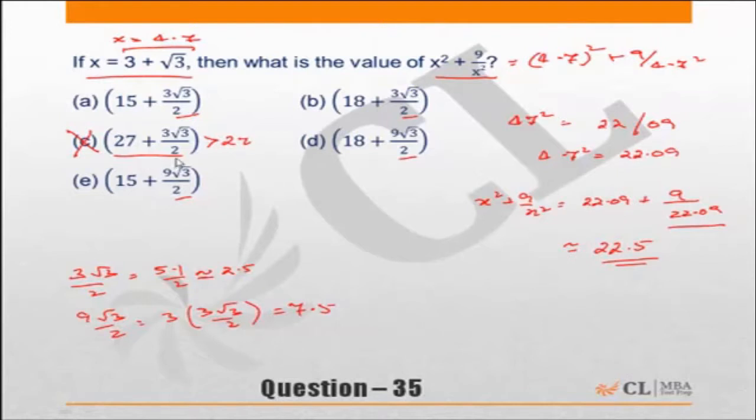So let's start checking the choices. We are looking for value approximately equal to 22.5. So choice A is 15 plus 2.5, about 17.5. Incorrect. Choice B: 18 plus 2.5 which makes it about 20.5. Incorrect.